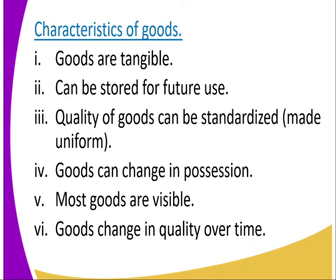Number three: the quality of goods can be standardized — made uniform. For example, books used in the Kenya curriculum are standardized; they are produced and then reviewed before being standardized. Number four: goods can change in possession. Today I am possessing a laptop, but I can give it to someone else and the possession changes from me to that other person.